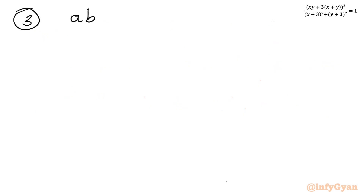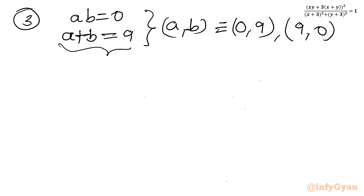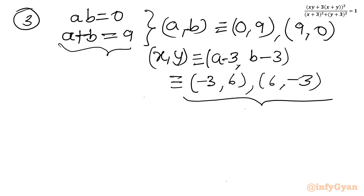For system 3, ab = 0 and a plus b = 9. Either a = 0 (b = 9) or b = 0 (a = 9). Converting back: x = a minus 3, y = b minus 3. So (a, b) = (0, 9) gives (x, y) = (minus 3, 6), and (a, b) = (9, 0) gives (x, y) = (6, minus 3). Two more ordered pairs confirmed.